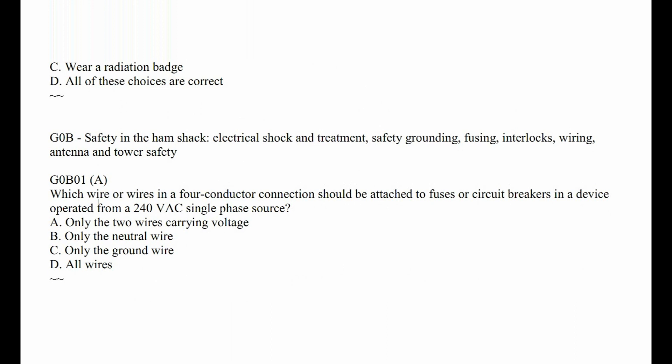G0B01: Which wire or wires in a four-conductor connection should be attached to fuses or circuit breakers in a device that operates from 240-volt single phase? The obvious answer is the two wires that carry the voltage. The neutral wire is at ground, and so is a ground wire — these are redundant safety wires.